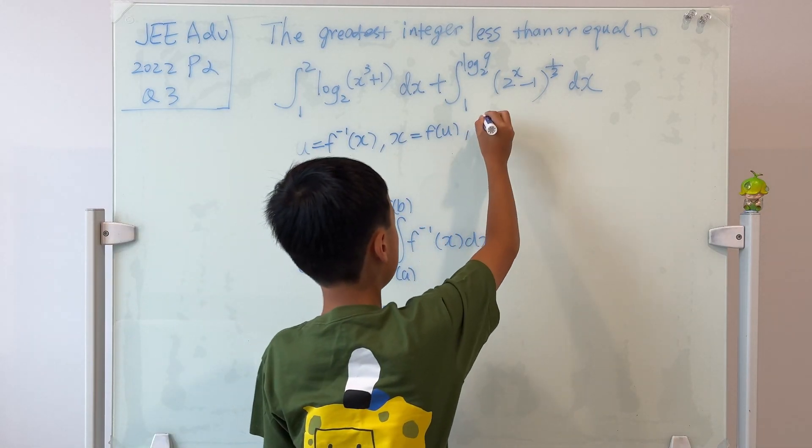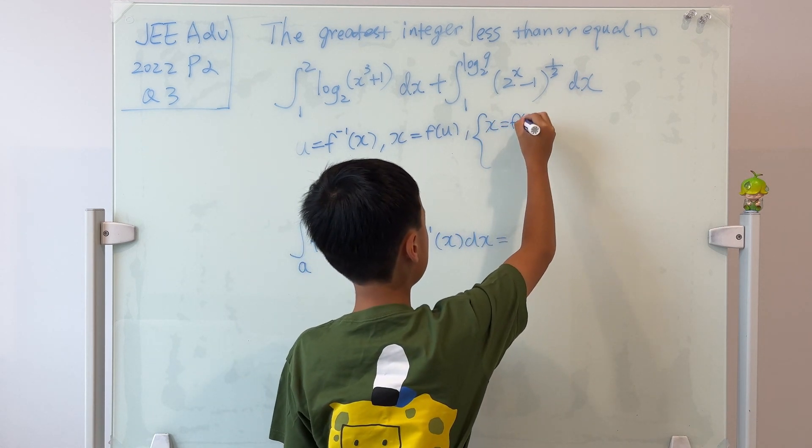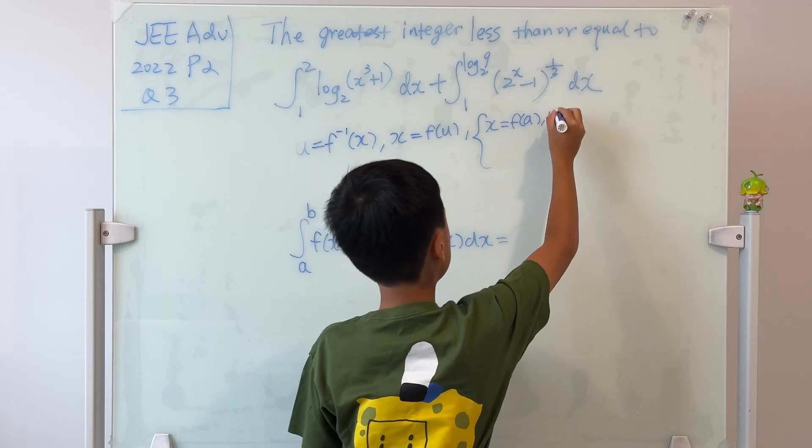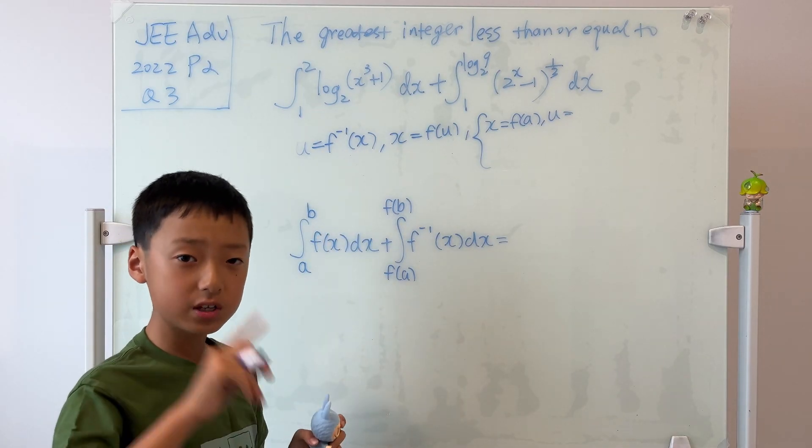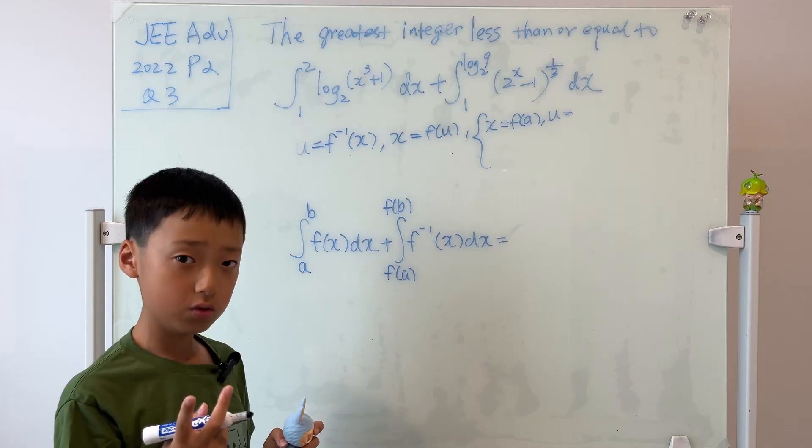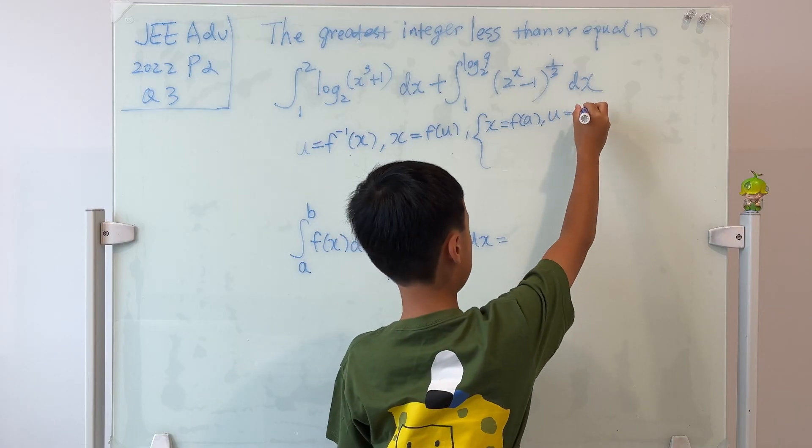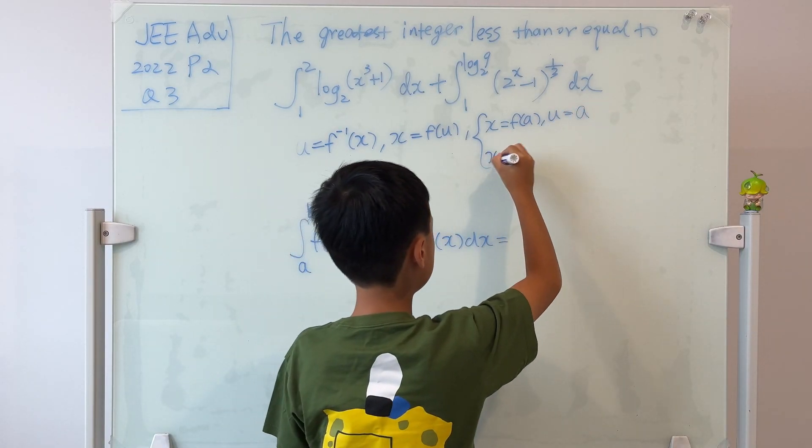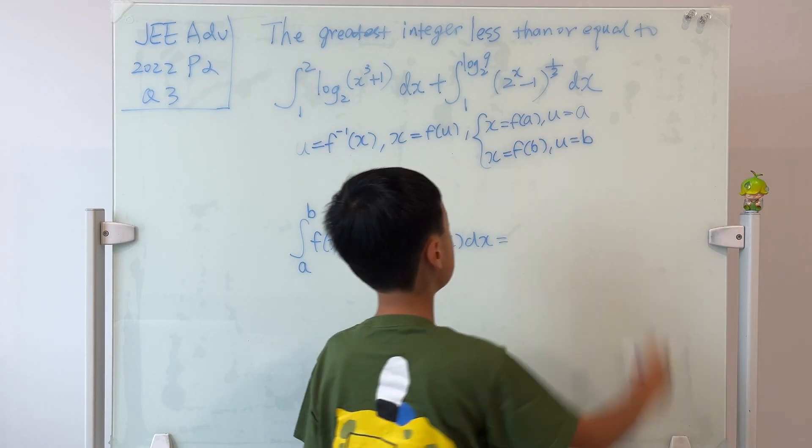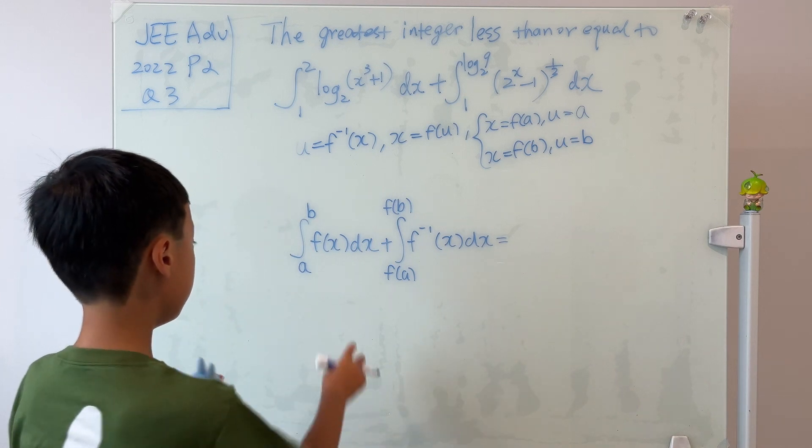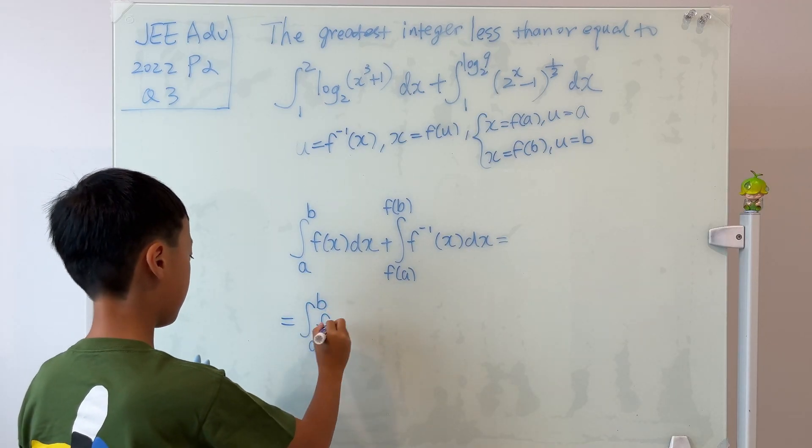We know that x is equal to f(a), then u will be, if we plug f(a) in here, then it's f inverse f(a). And those two are inverse operations, so they cancel each other out. So this is just a. And when x is equal to f(b), by using the same logic, we know that u will be equal to b. So this is actually equal to the integral from a to b of f(x) dx.